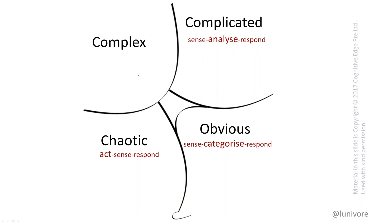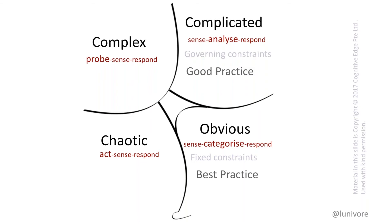In the Complex domain, because we can't predict what's going to happen but have space to make things safe, we must 'probe' — try something in a way that's safe to fail. These domains also have constraints: the Obvious domain has fixed constraints, like putting a plug in a wall — one best practice. The Complicated domain has governing constraints — rules that apply to everything; science is repeatable, with good practice but multiple ways of doing things.